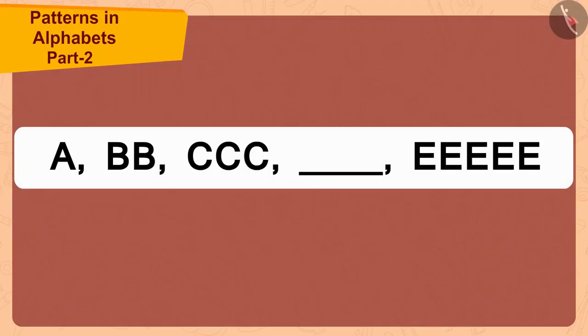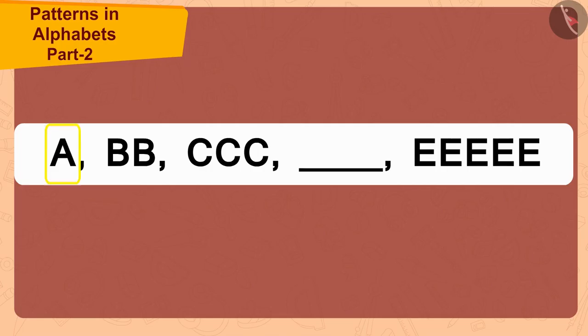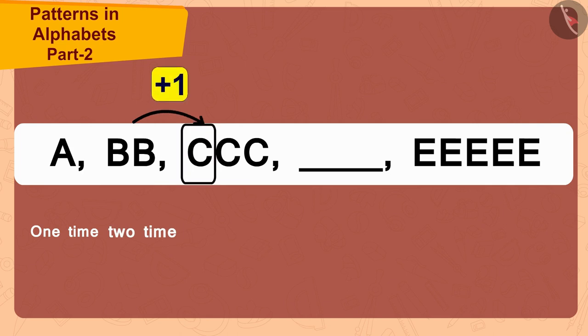Here the letters are written in sequence, and each time the letters are being added to the pattern, the number of times that letter is being repeated is also increasing by one. For example, the first letter A is written only once, while the second letter B is written twice, and the third letter C, once more than B, has been written three times.